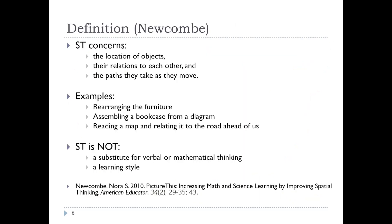Here are some definitions. These come from a woman named Nora Newcomb, and the paper is cited from an educational standpoint. Spatial thinking has to do with the location of objects, the relation of those objects to each other, and how they can move through space. Hopefully you can think of lots of examples of where you do spatial thinking: rearranging furniture, assembling a bookcase, following some kind of map. These days they don't give you many words on those diagrams — they just give you pictures. If you're not a spatial thinker, you might have a tough time with that. Reading a map — hardly any of us use maps anymore because of GPS, but it is important.